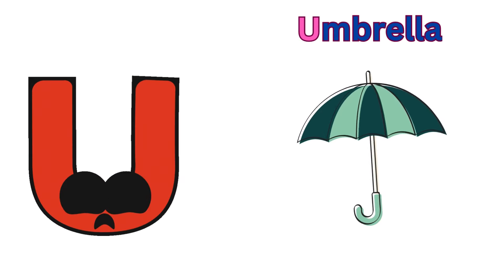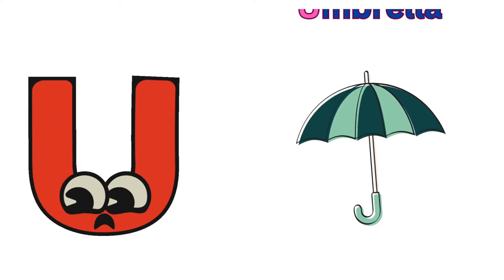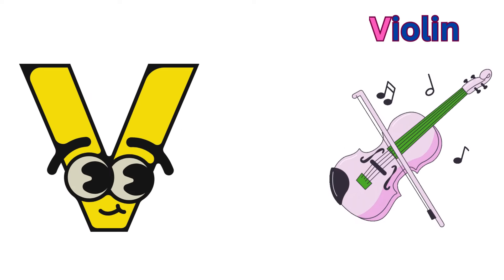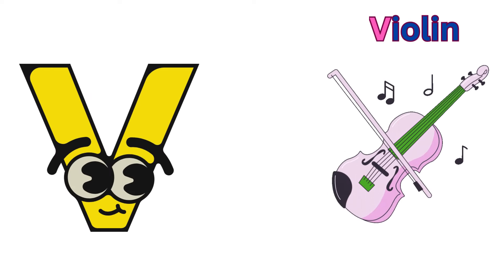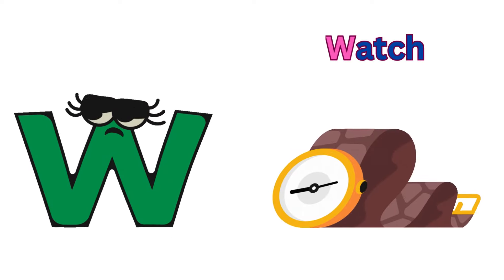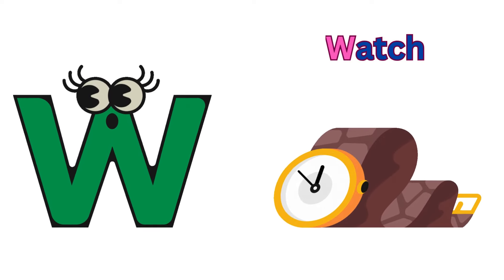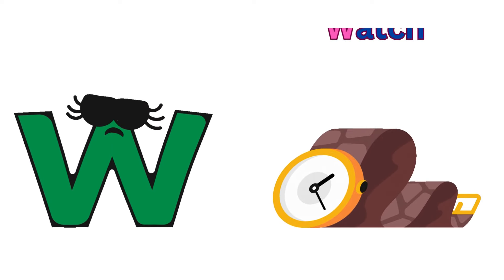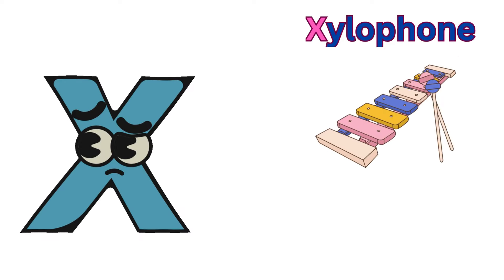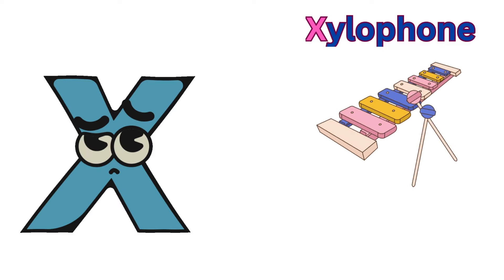U is for umbrella, u-u-umbrella. V is for violin, v-v-violin. W is for watch, w-w-watch. X is for xylophone, z-z-xylophone.